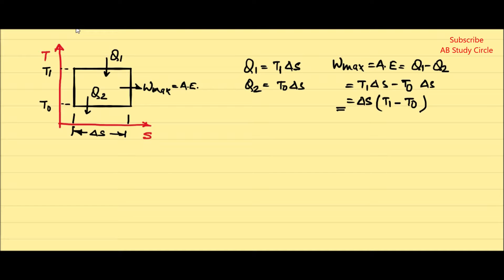Now let us suppose we are giving heat Q1 through a finite temperature difference. That means we take heat Q1 from a reservoir maintained at temperature T1, but supply that heat to the engine at a lower temperature T1', which is less than the source temperature T1. How much work can be obtained from this heat transferred through a finite temperature difference? We find this by considering a reversible engine operating between T1' and T0.